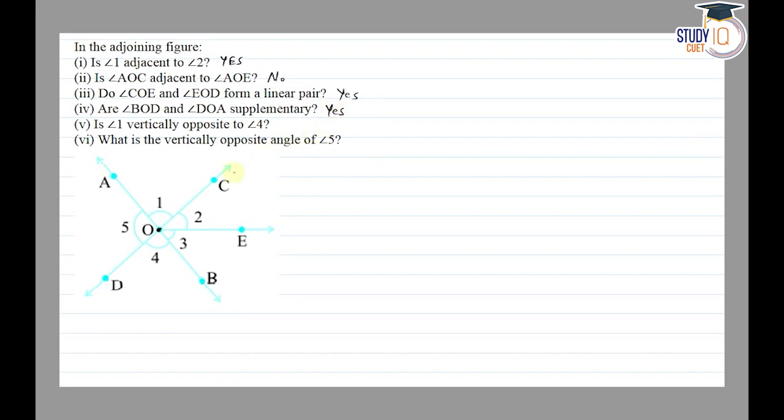Is angle 1 vertically opposite to angle 4? So vertical opposite angles, when two lines intersect to each other.